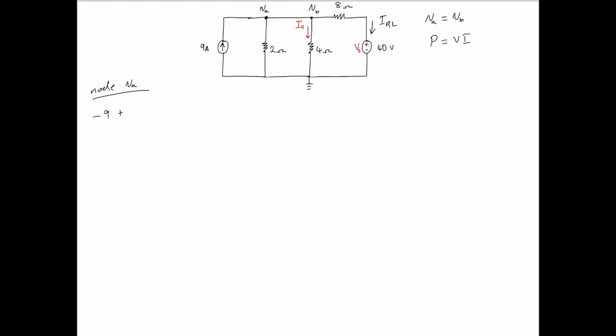So, that is negative 9 plus VA minus 0 volts all over 2 ohms plus VA, because remember VA is equal to VB, minus 0 volts all over 4 ohms plus VA minus the 40 volt source all over 8 ohms equals 0.